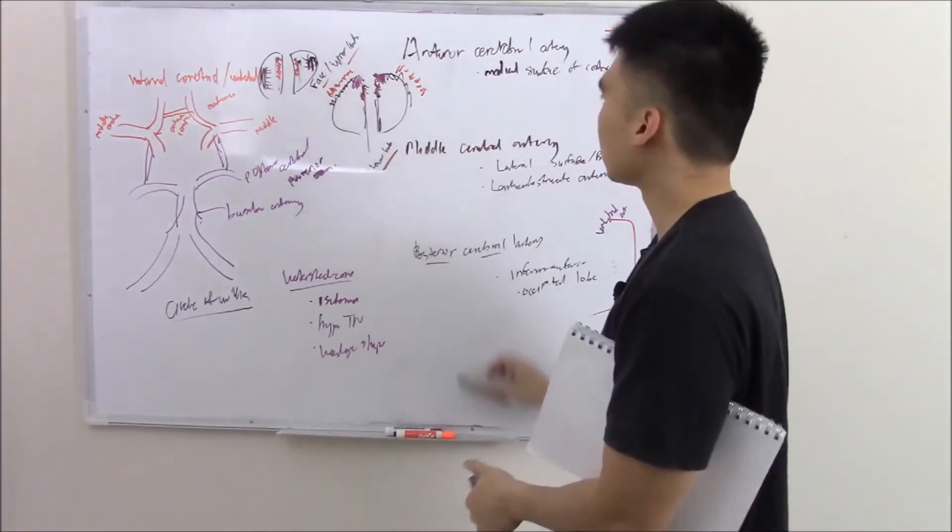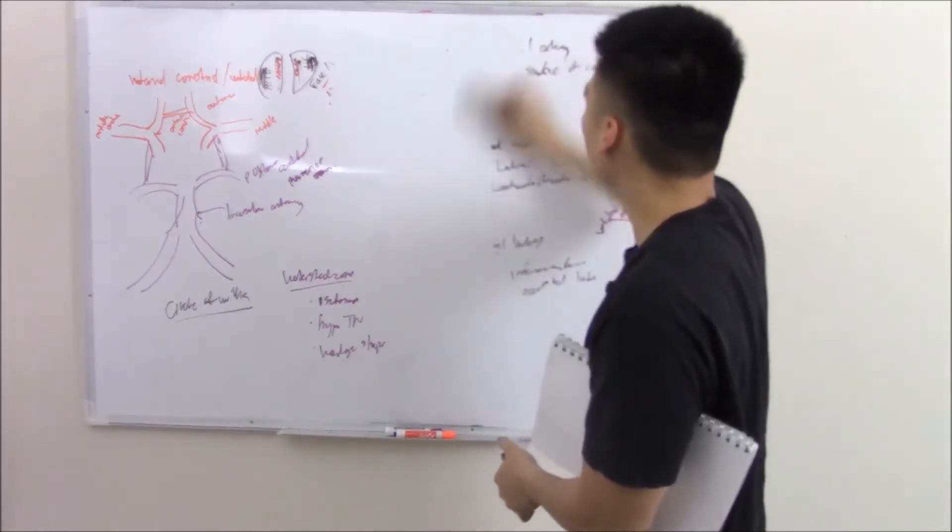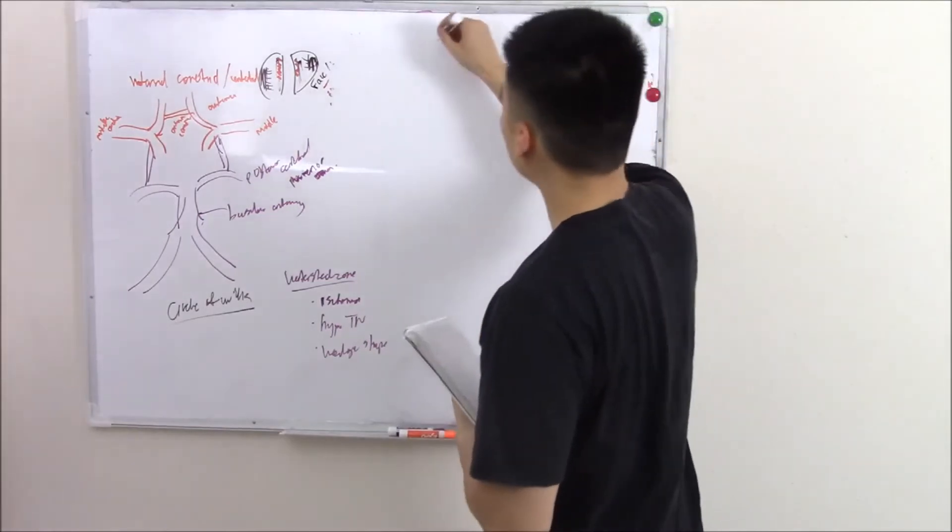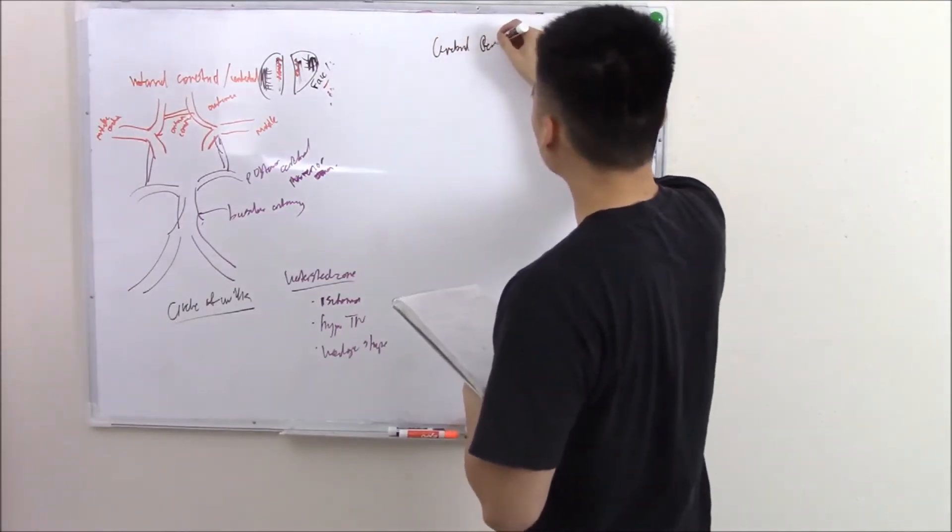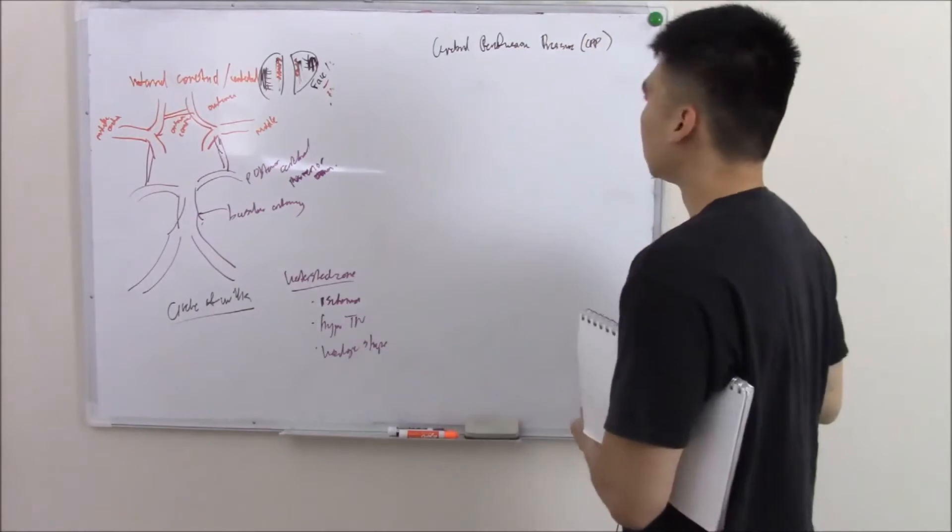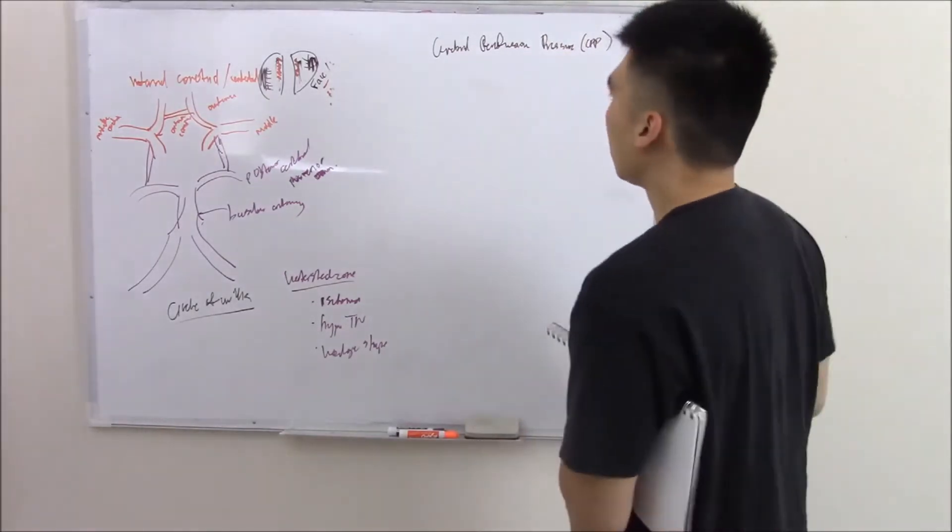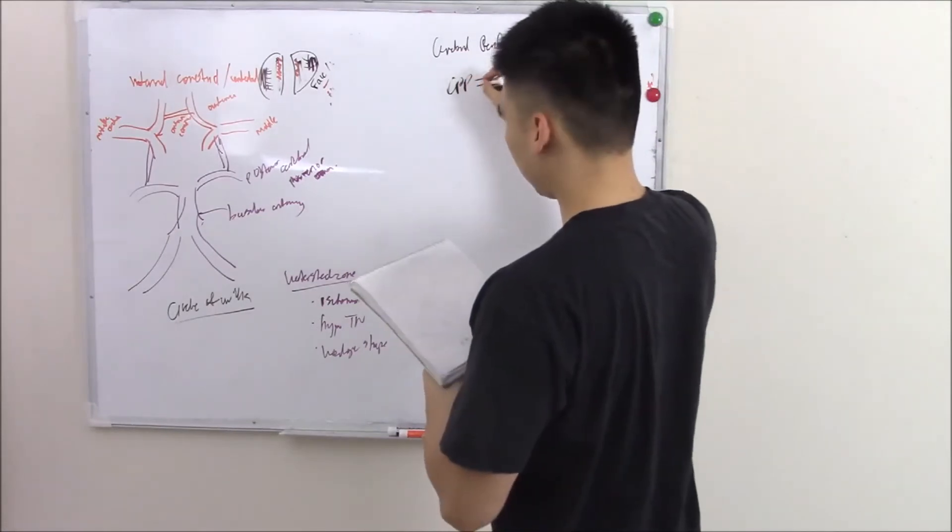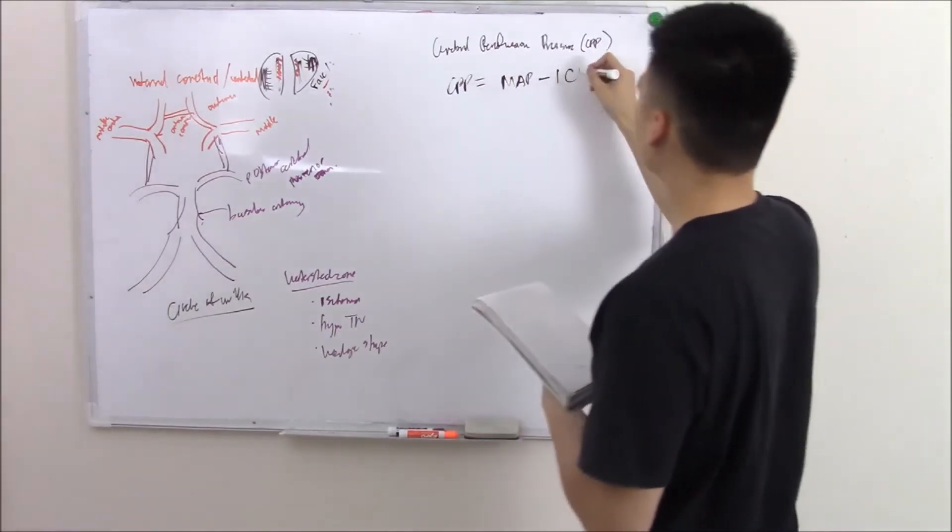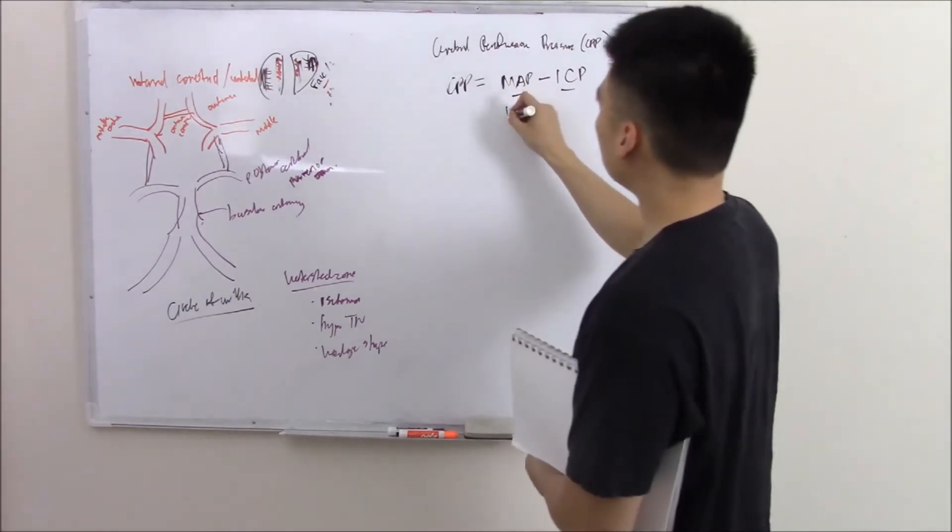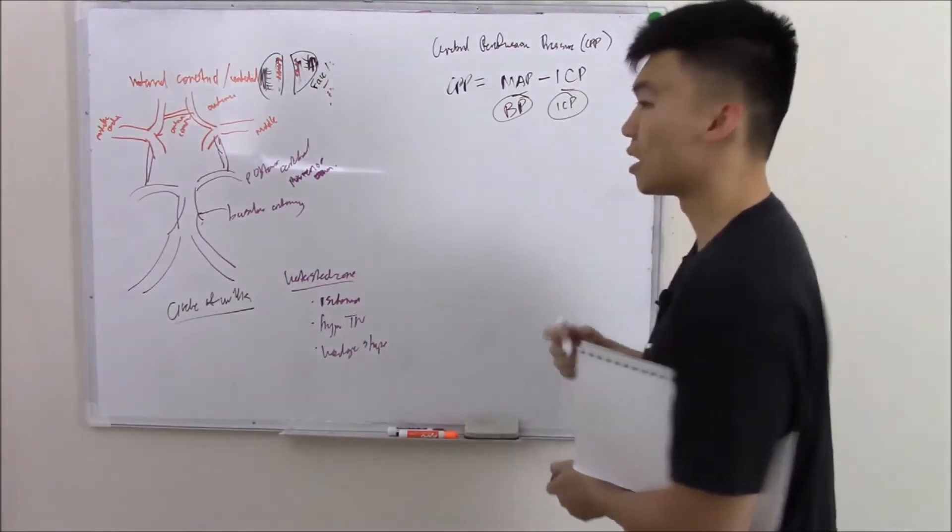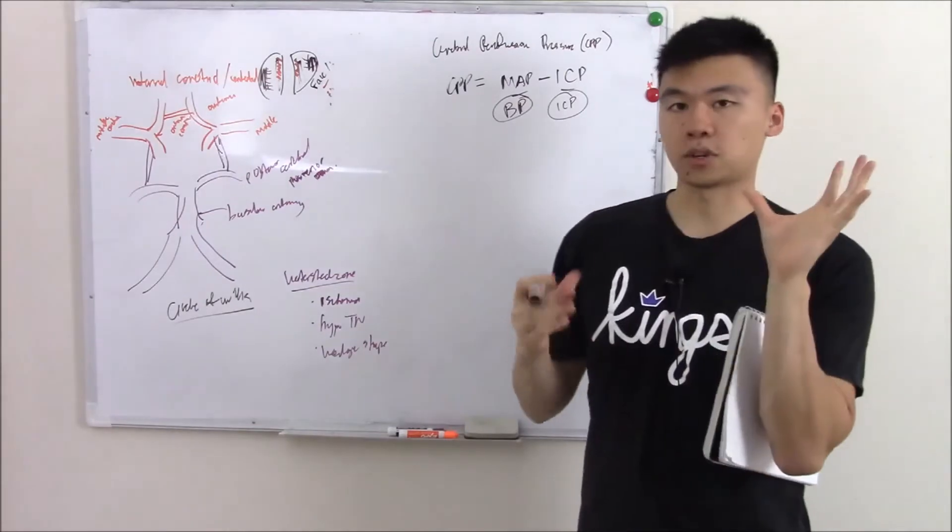Now some complicated physio stuff they want you to know for some apparent reason is that they want you to know about cerebral perfusion pressure. Cerebral perfusion pressure, also known as CPP. This is basically the pressure of blood that goes to your brain. And your CPP will equal your mean arterial pressure minus your intracranial pressure. That's a fancy way of saying it's affected by your blood pressure and the pressure in your brain currently. So your intracranial pressure. Just a recap of basic physics.